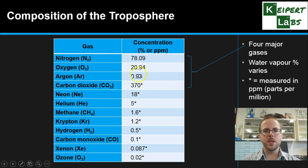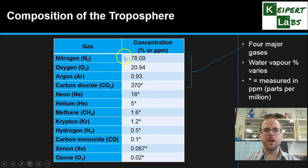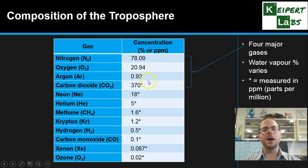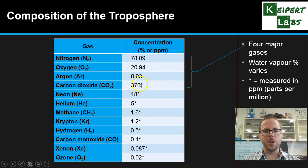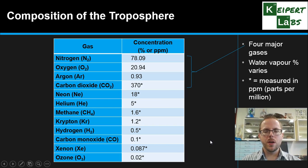Oxygen levels are just under 21% of the atmosphere, while over three quarters is nitrogen, which doesn't really do anything for us biologically. That oxygen level is really important. Remember, the asterisked values are measured in parts per million, not percent. Okay, that's all for today — thanks very much for watching. Bye for now.